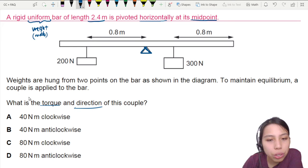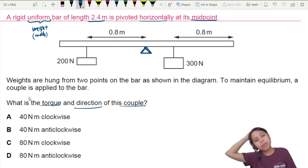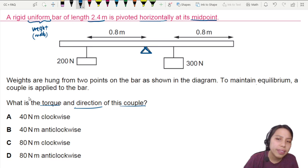What is the torque and direction of this couple? So we need to add this couple to maintain equilibrium. That means this rod as it is, is not in equilibrium at the moment. So maybe we do a first check to see what is the net moment for this force.